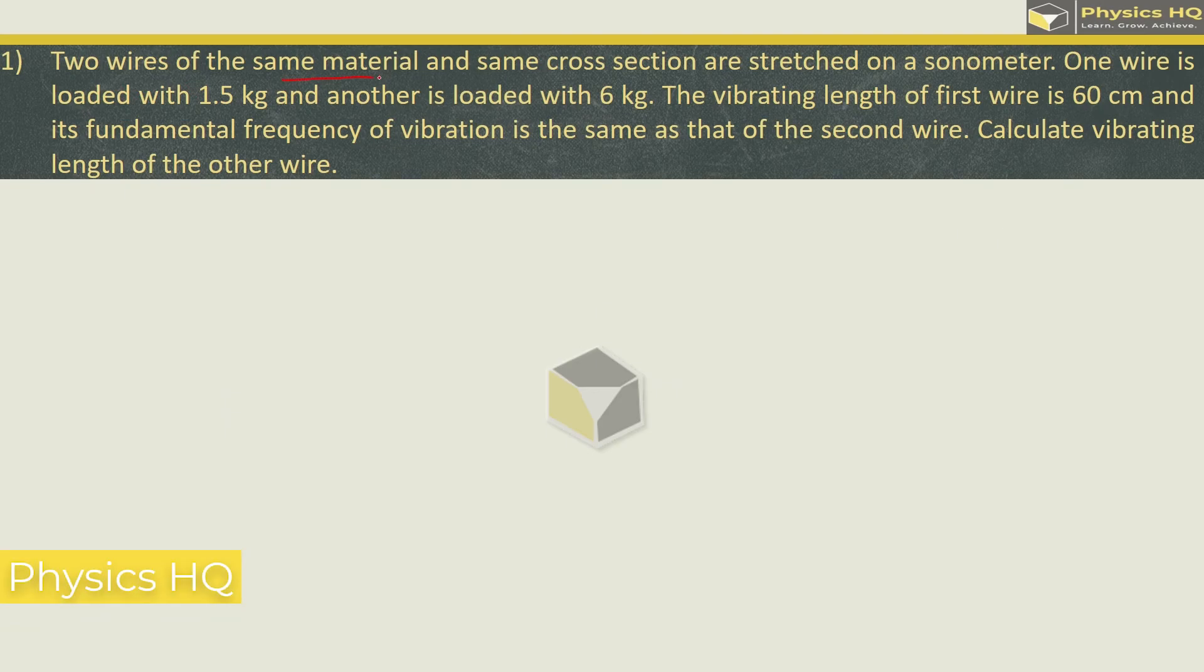Two wires of same material and same cross section are stretched on a sonometer. One wire is loaded with 1.5 kg and another is loaded with 6 kg. The vibrating length of first wire is 60 cm and its fundamental frequency of vibration is same as that of the second wire. Calculate the vibrating length of the other wire. So we are given the length of the first wire to be equal to 60 cm. Length of the second wire is supposed to be found out.